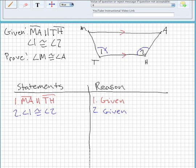So now what we want to show is that angle M and angle A are congruent, and to do that we're going to show that angle 2 and angle A are supplementary. So angle 2 and angle A are supplementary.